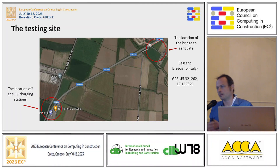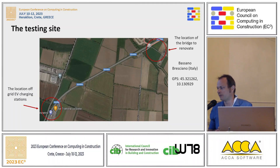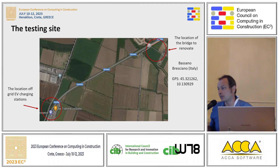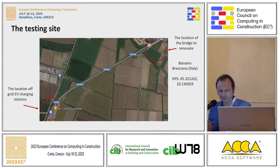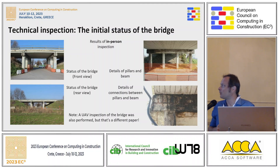First we had to identify the bridge to renovate. We selected a bridge located in the south part of the province of Brescia — the small village is called Bassano Bresciano. The bridge is along one of the most important roads connecting the north and south parts of the province, so it is quite important.